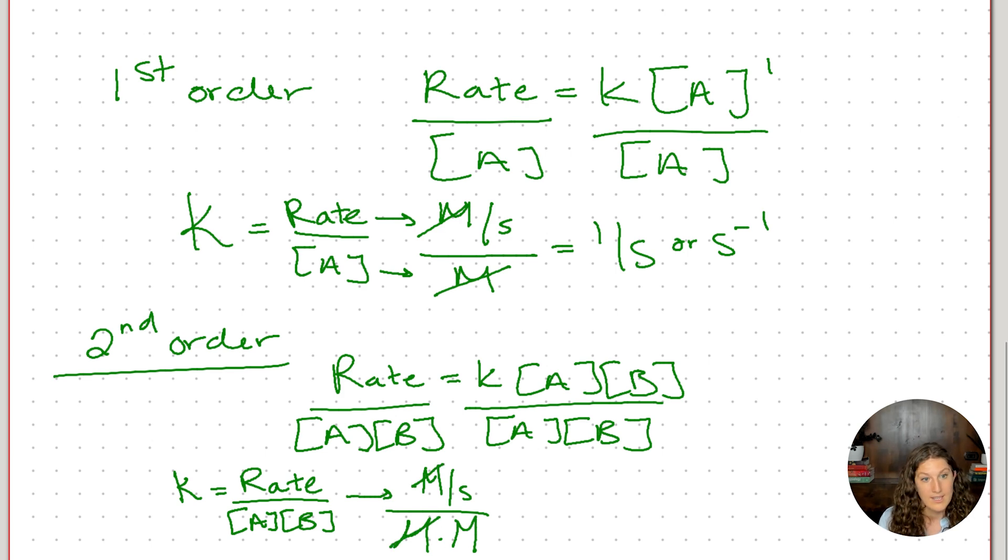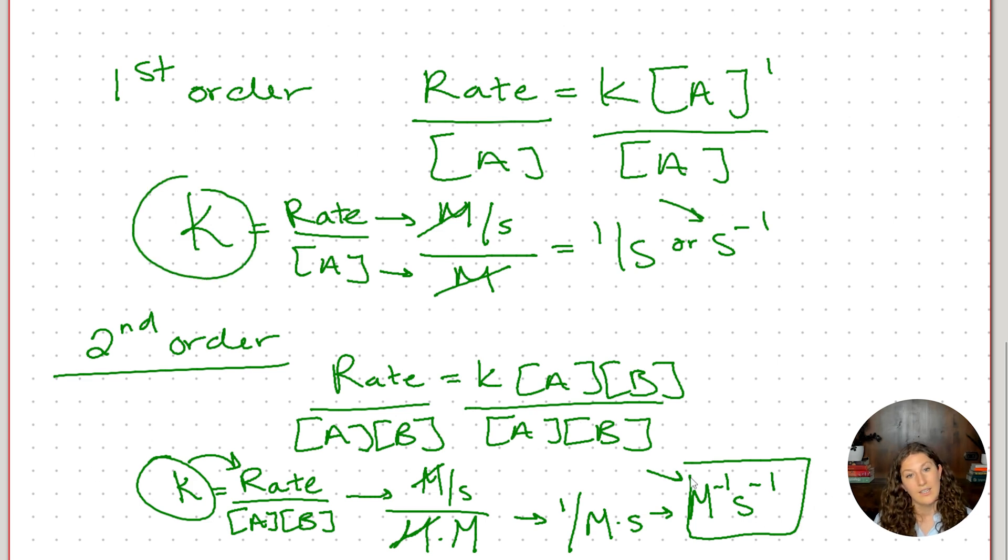So again, one of these molarities cancel, but now we have a molarity on the denominator. So it'll end up being 1 over molarity times seconds, or as it's more often written, molarity to the negative 1, seconds to the negative 1. So if they ask you for a second order rate constant, if they ask you for the equation or the unit, now you have both. So for a first order, the unit is seconds to the negative 1, and for second order, the units are molarity to the negative 1, seconds to the negative 1. It's not a mystery, it's not something to memorize necessarily, it's truly just rearranging our rate equation. I hope that was helpful for you.